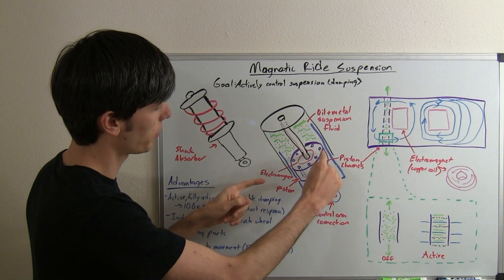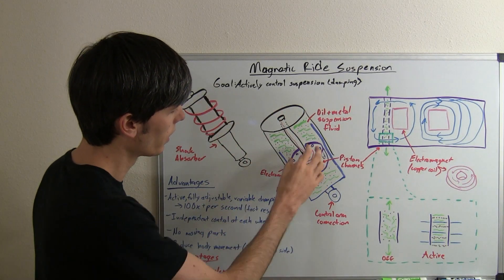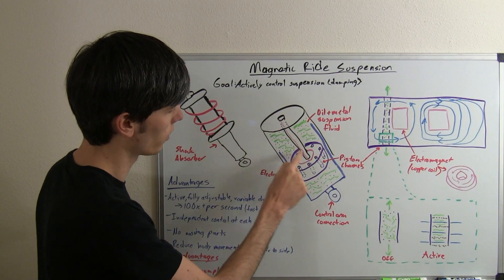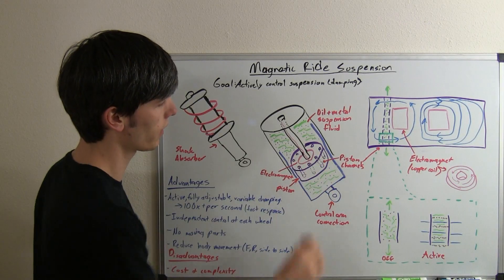What we've got inside of this piston here, which is connected to the shock absorber body through this line here, and then we've got this line coming down, this coil coming down, and then we've got an electromagnet inside of that.